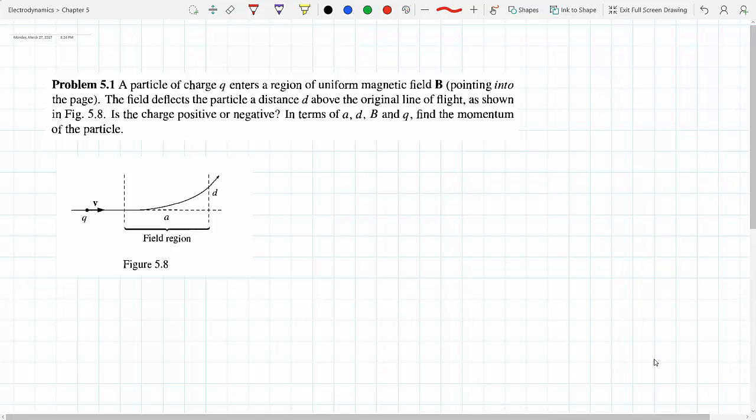Okay, so a particle of charge q enters a region of uniform magnetic field pointing into the page. The field deflects the particle a distance d above the original line of flight.